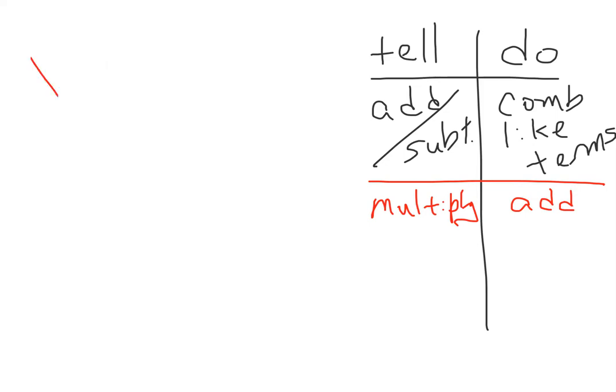So in other words, x to the third times x to the fourth becomes x of three plus four or x to the seventh. Exponents add.